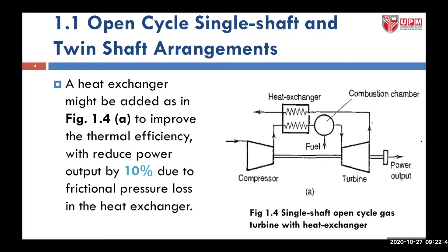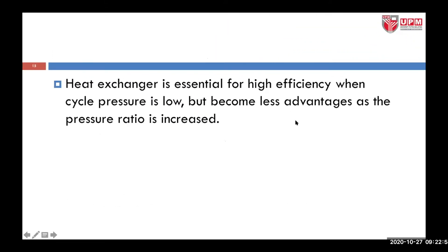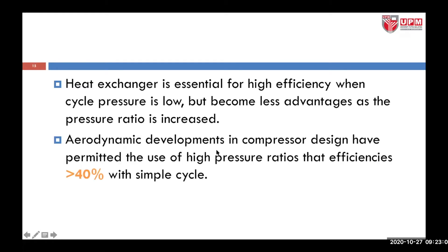This is an example of a single shaft where we have a single shaft connected to the compressor and the turbine — an open cycle with heat exchanger. A heat exchanger is essential for high efficiency when cycle pressure is low, but it becomes less advantageous as the pressure ratio increases in the compressor. Aerodynamic developments in compressor design have permitted the use of high pressure ratios, giving efficiency of more than 40% compared to a simple cycle.